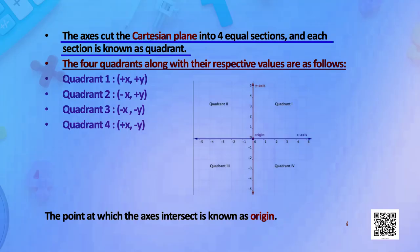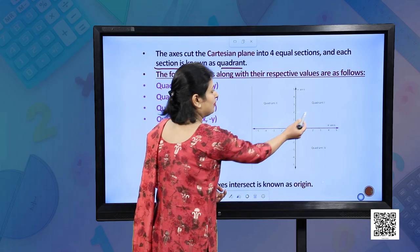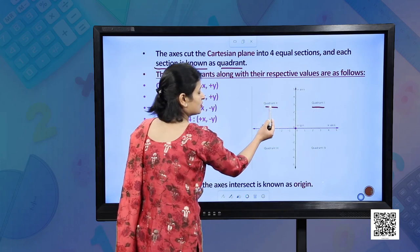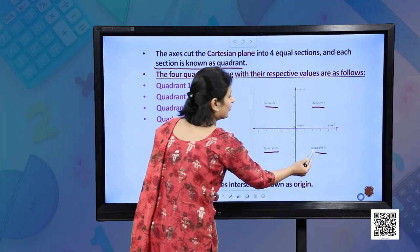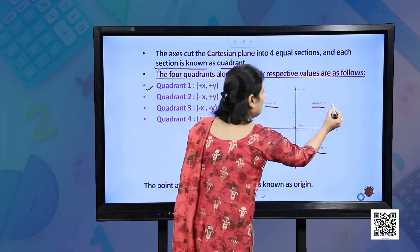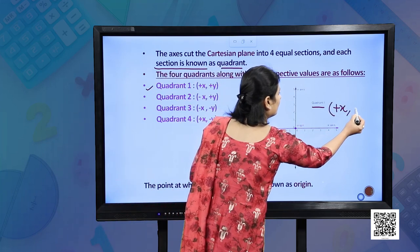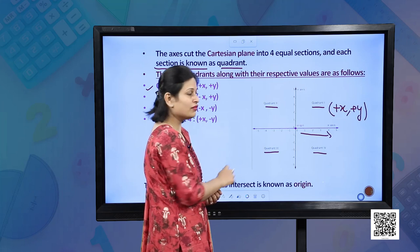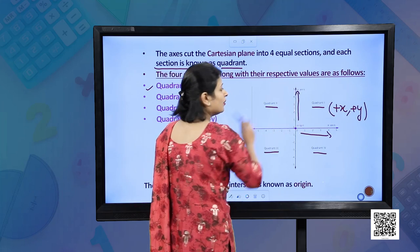The Cartesian plane is divided into four equal sections known as quadrants. The quadrants are named in a particular order which we need to strictly follow. This is quadrant 1, this is quadrant 2, quadrant 3, and quadrant 4. In quadrant 1, the x-coordinate and the y-coordinate are both positive, as you can see the values of x and y over here are positive.